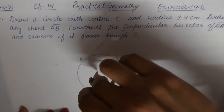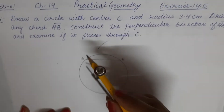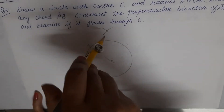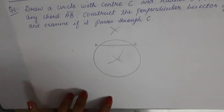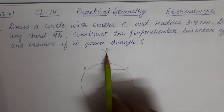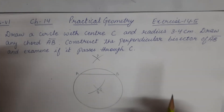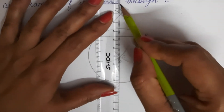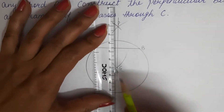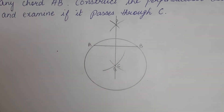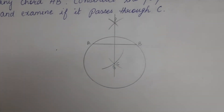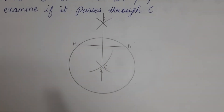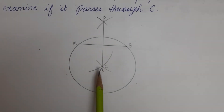We draw two arcs which will cut each other — one upward and one downward. Name these two intersecting points as P and Q, and join them. PQ is the perpendicular bisector of AB.